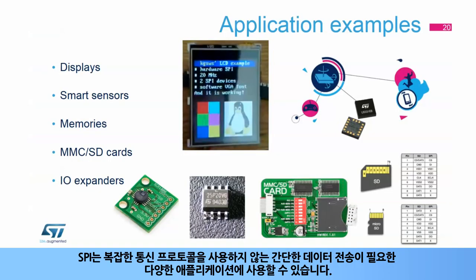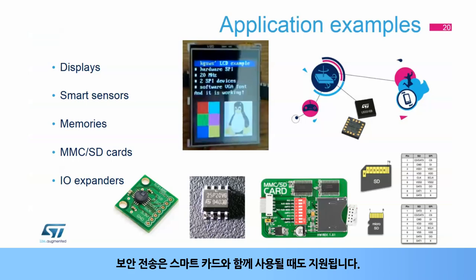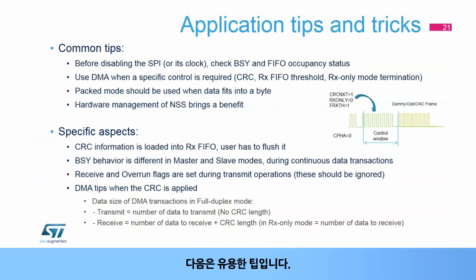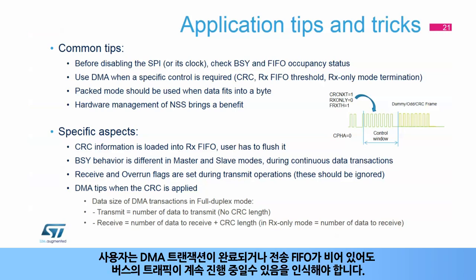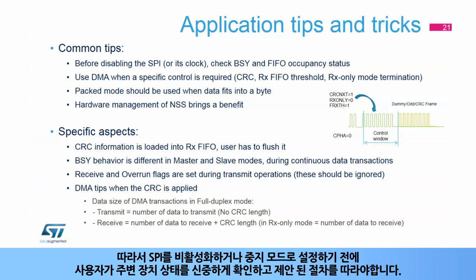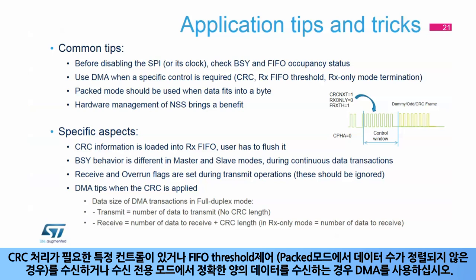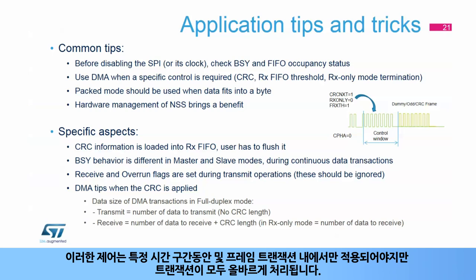The SPI can be used in a wide range of applications where a simple data transfer is required without the need for a complex communication protocol. Secured transfers are also supported when used with smart cards. Here are some helpful tips. The user should be aware that traffic on the bus may still be ongoing even if the DMA transaction is completed or the transmit FIFO becomes empty. This is why the user has to carefully check the peripheral status and follow the suggested procedures before disabling the SPI or placing it in stop mode. Use the DMA if you have a specific control that requires CRC handling or receive FIFO threshold control when the number of data is not aligned in packet mode, or to receive an exact amount of data in receive-only mode. Such controls have to be applied during a specific time window and exclusively within a frame transaction so all the following transactions are handled properly.